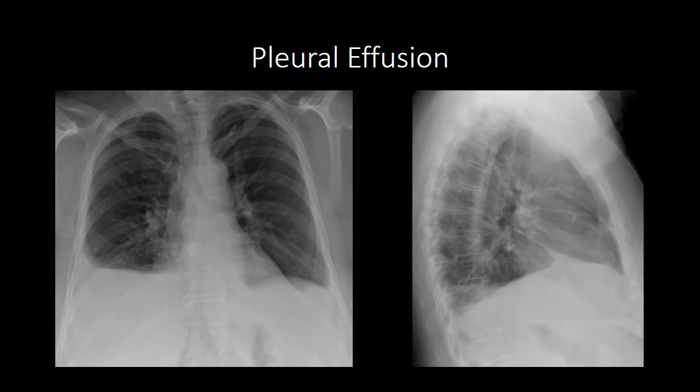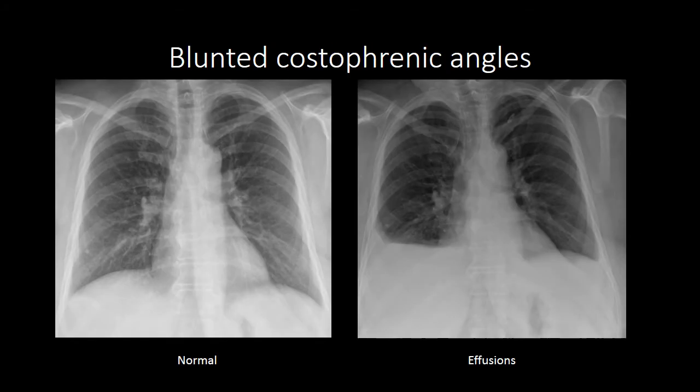If you look in the left hemithorax, we have likely a very small left pleural effusion, so you get a little blunting of the costophrenic angle, but it's not nearly as apparent as on the right. On the lateral radiograph, we see this blunted hemidiaphragm and a meniscal sign, with a little blunting or rounding of the costophrenic angle. Compare that to a normal patient, who should have sharp angular margins at the costophrenic angle — on both sides, we see a nice sharp costophrenic angle, whereas in the patient with effusions, we have these rounded or blunted costophrenic angles.